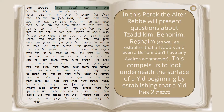The Alta Rebbe will present a number of teachings from Chazal about the different levels of Yid, and also establish that a Tzaddik and even a Benuni don't have any Aveiros whatsoever. This compels us to look underneath the surface of a Yid in order to answer the questions the Alta Rebbe will ask, and to understand the difference between a Tzaddik and a Benuni if both of them on the outside conduct themselves the same — neither of them have any Aveiros.